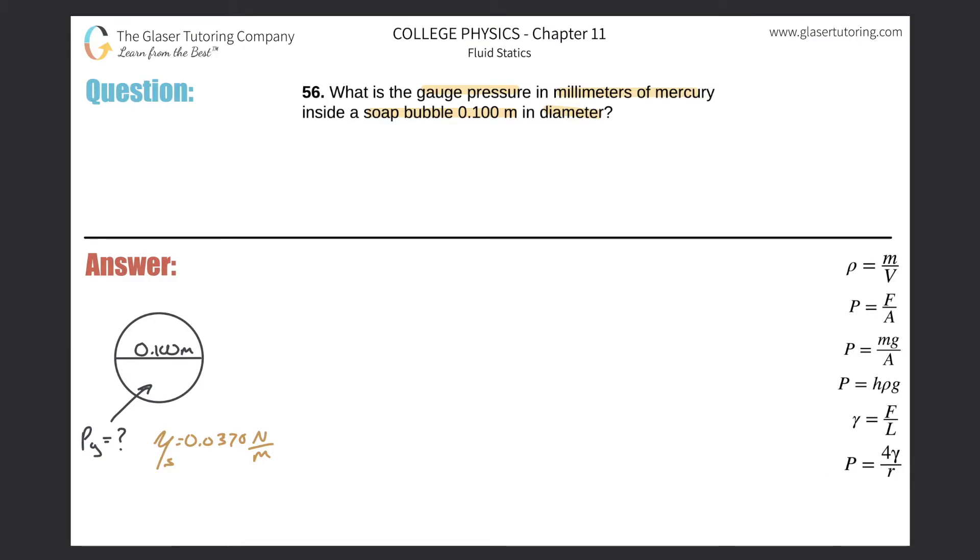So basically what I can do is let me write that formula down. So the gauge pressure here, even though it doesn't say that it is, I'm going to write it with a little g, is equal to 4 multiplied by the surface tension, all divided by then the radius of the spherical bubble.